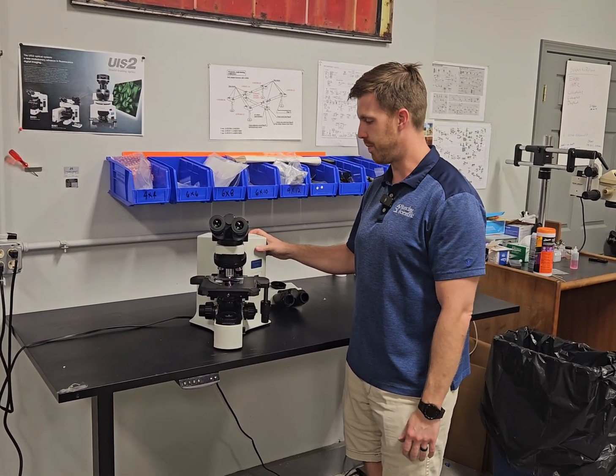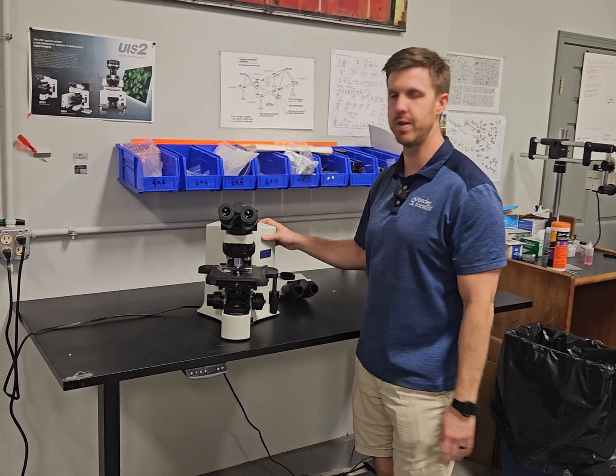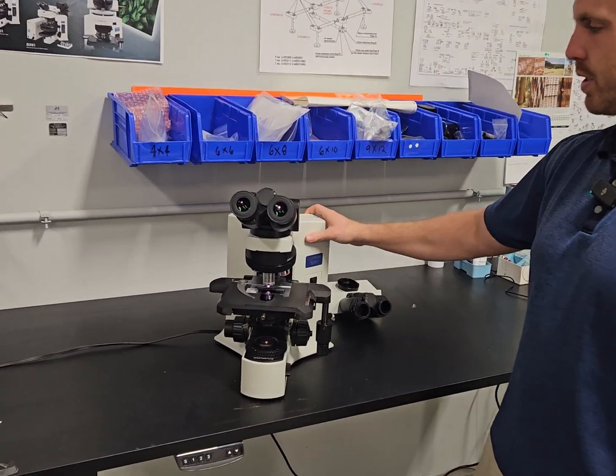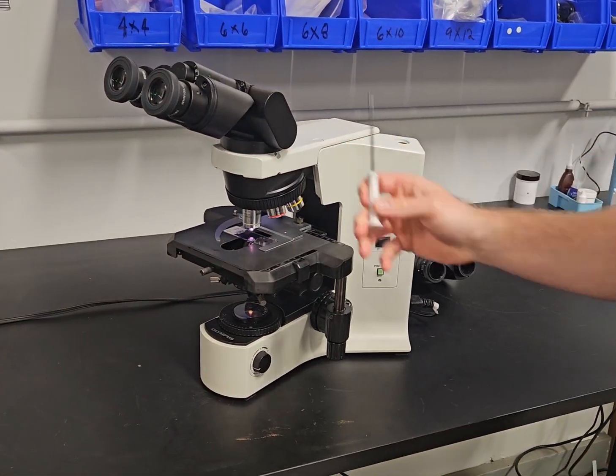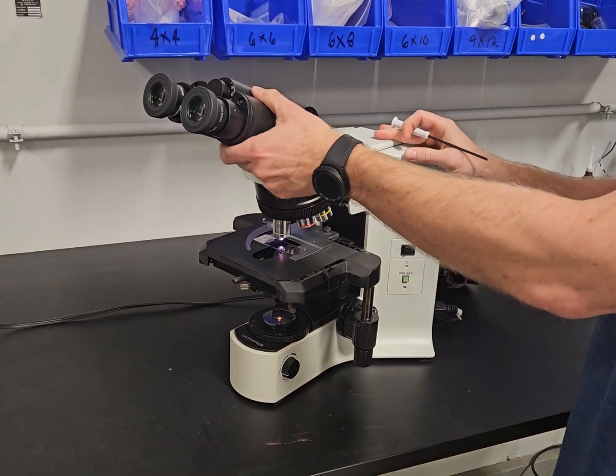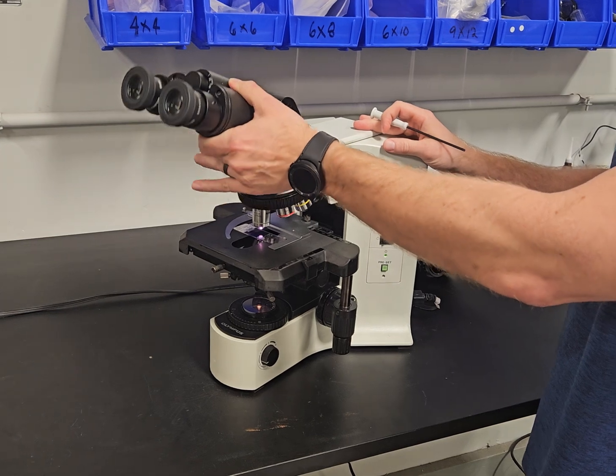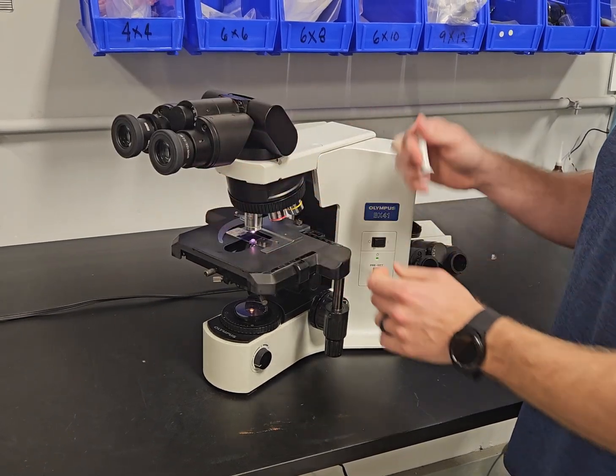We're going to come in and talk about some of the features and the options that we have. This scope has the tilting head on it. This is going to be the most common head that we sell on the scope. It's very ergonomic, tilts up and down.